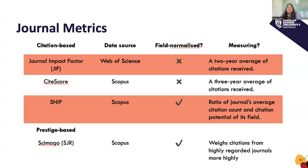We assume that the more citations those journals get, the more important the journal is for that field — the better quality of research, the greater the readership. Metrics will often come in the form of a score which tells you on average how many citations an article published in that journal will attract. There are a variety of metrics available, calculated using different data sources, and they may or may not be normalized to take into account the citation habits of the field.